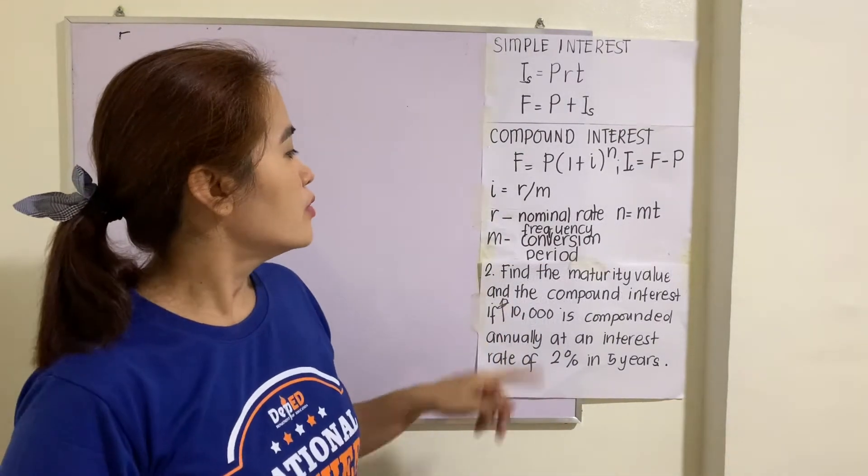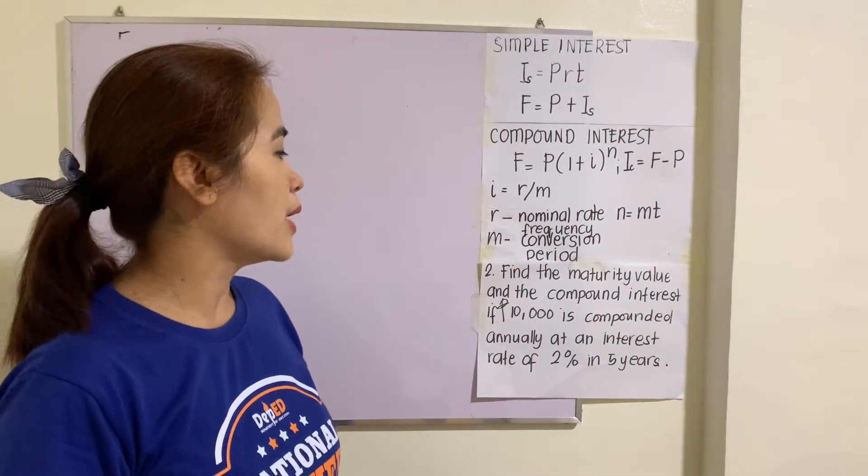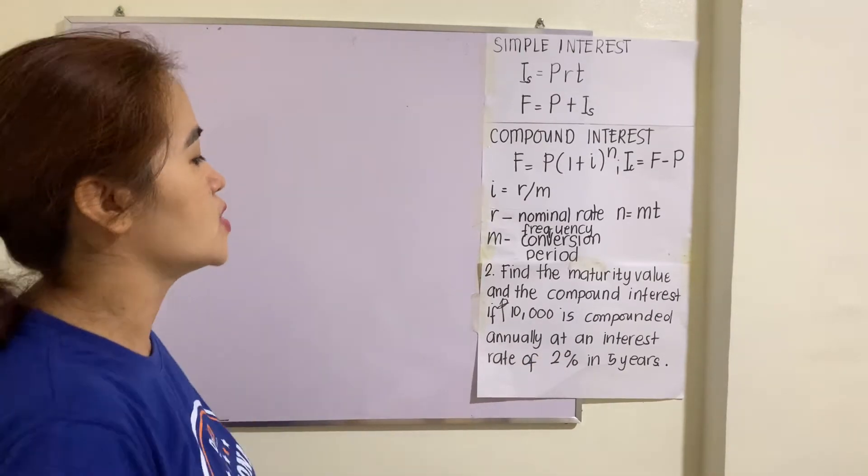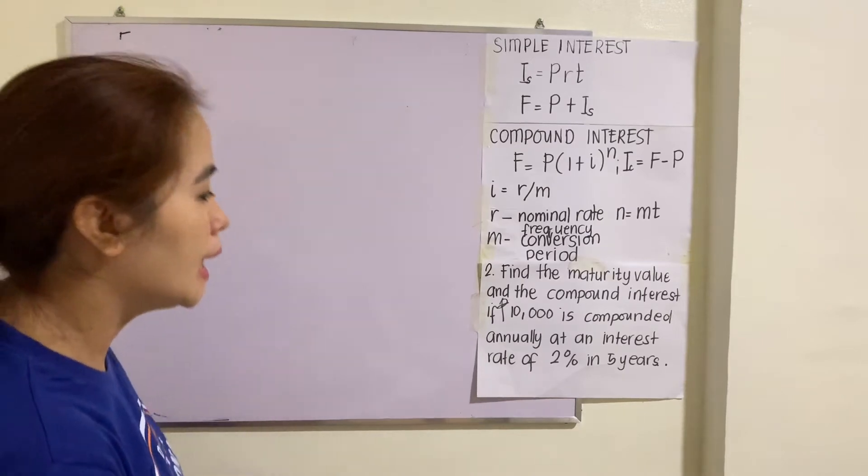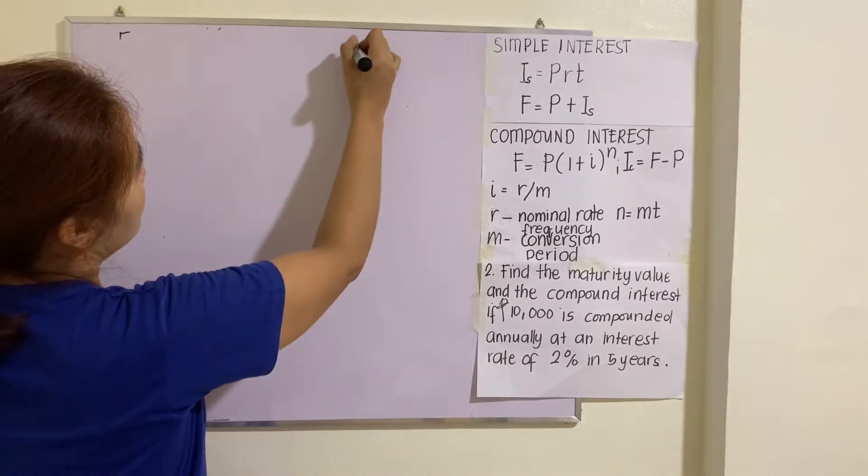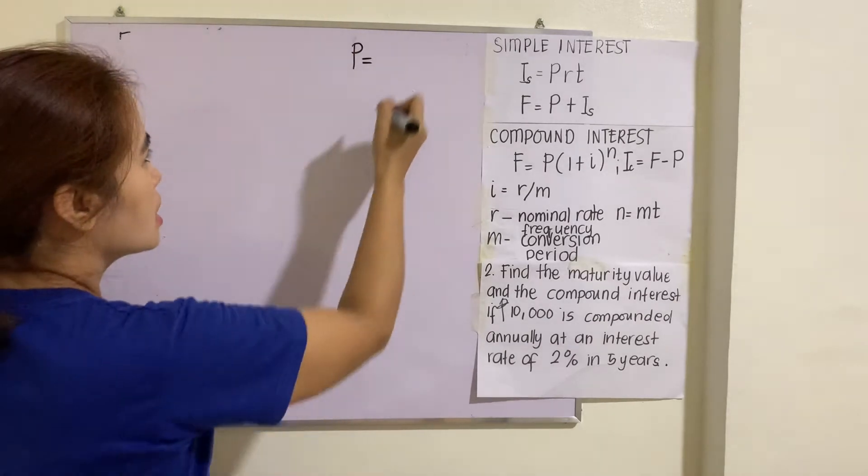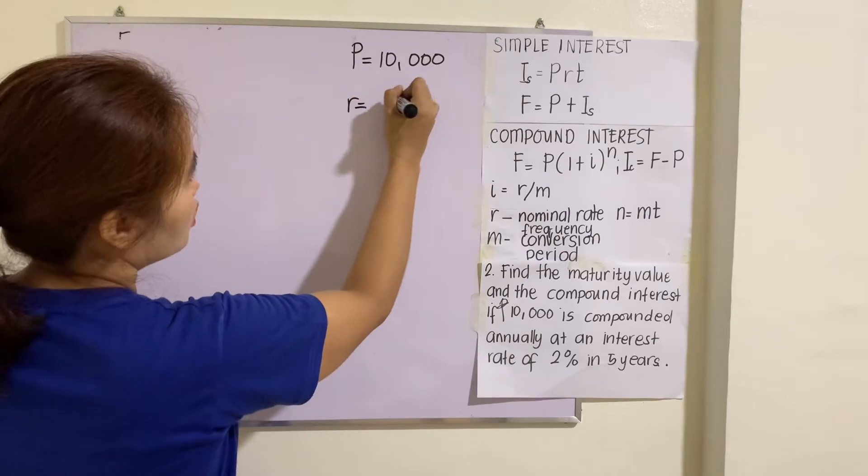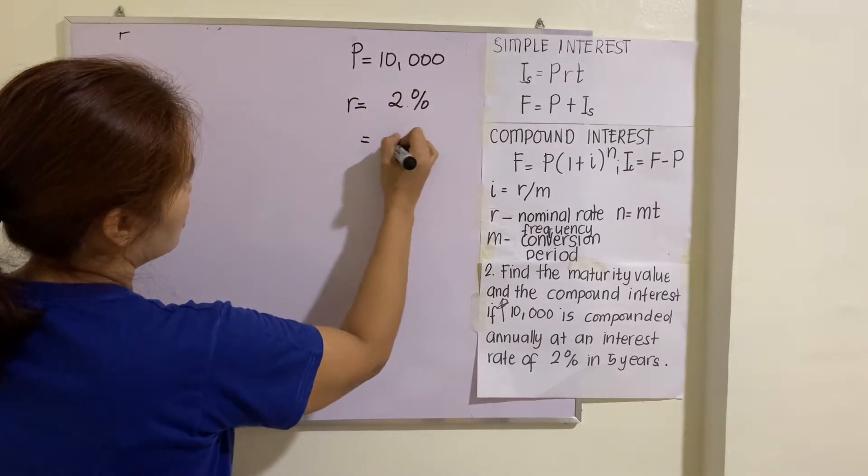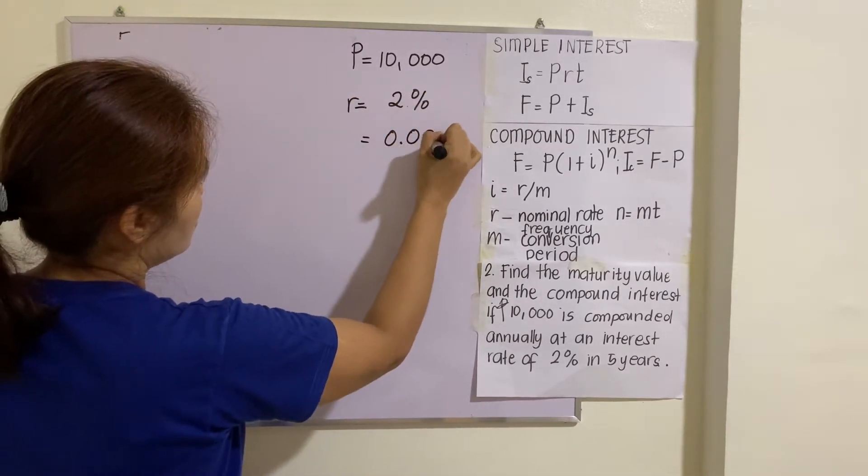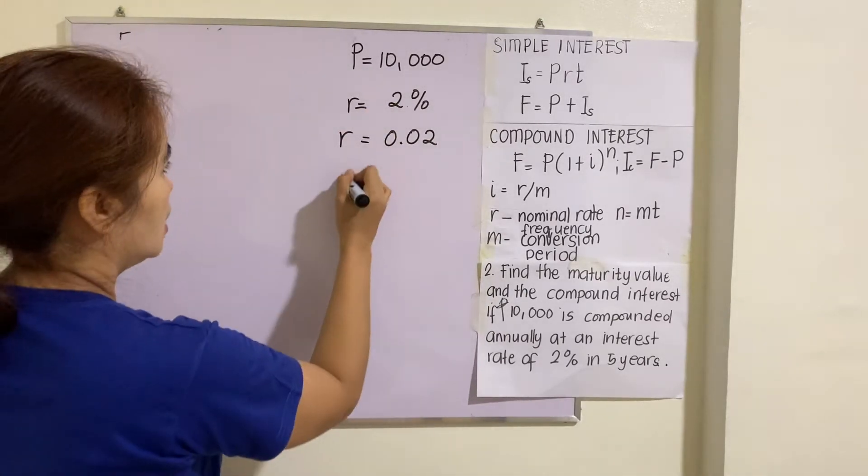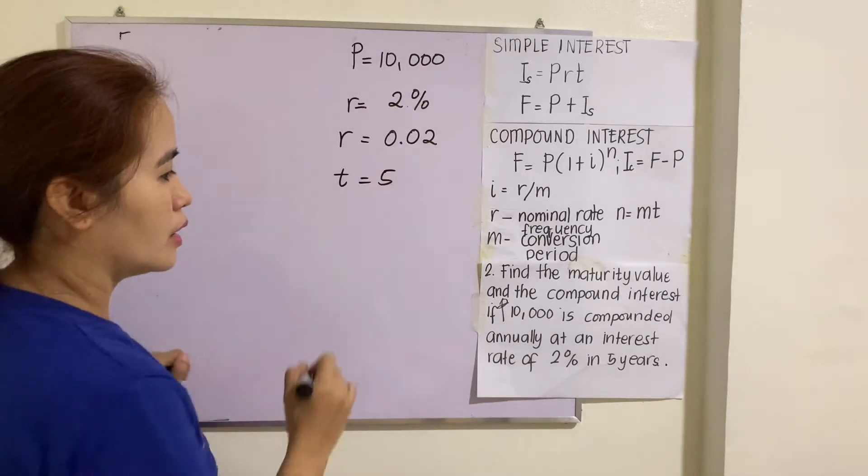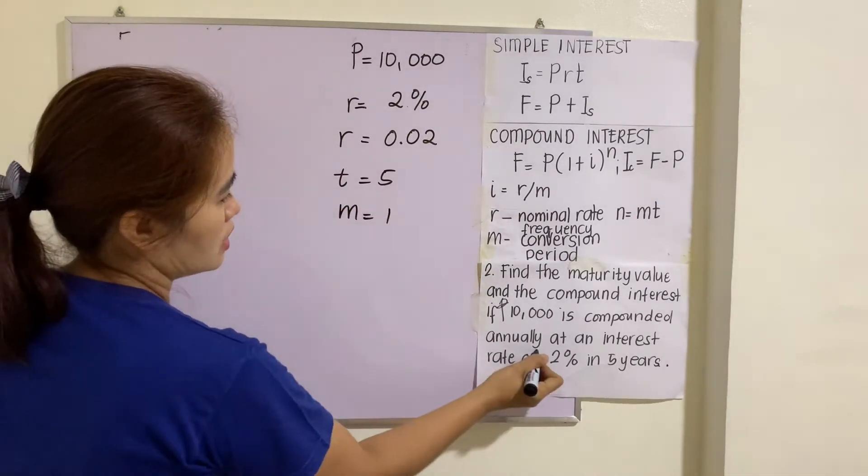Example number 2: find the maturity value and the compound interest if $10,000 is compounded annually at an interest rate of 2% in 5 years. So identify again: P = $10,000, R = 2% = 0.02, T = 5, and M = 1 since this one is annually.